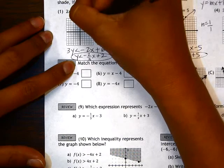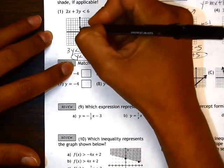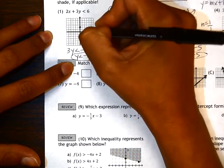The y-intercept is positive 2, slope is negative 2 over positive 3. So down 2, and then over positive 3.